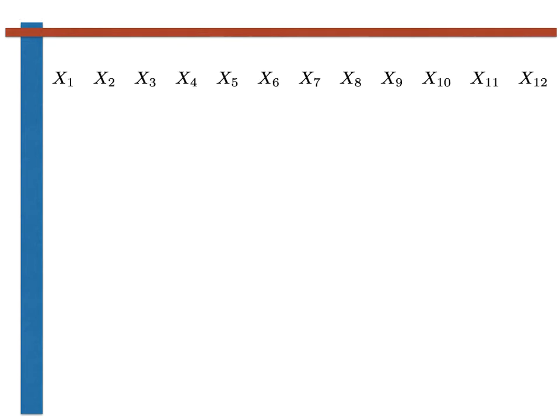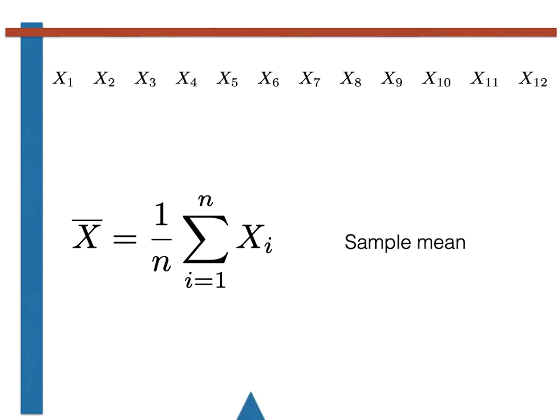Suppose that you are given a data set containing 12 random variables such as the one shown here. It should be clear how you can compute a sample mean from this data using the expression shown on this slide. For the data at the top of this slide, n here would be 12.